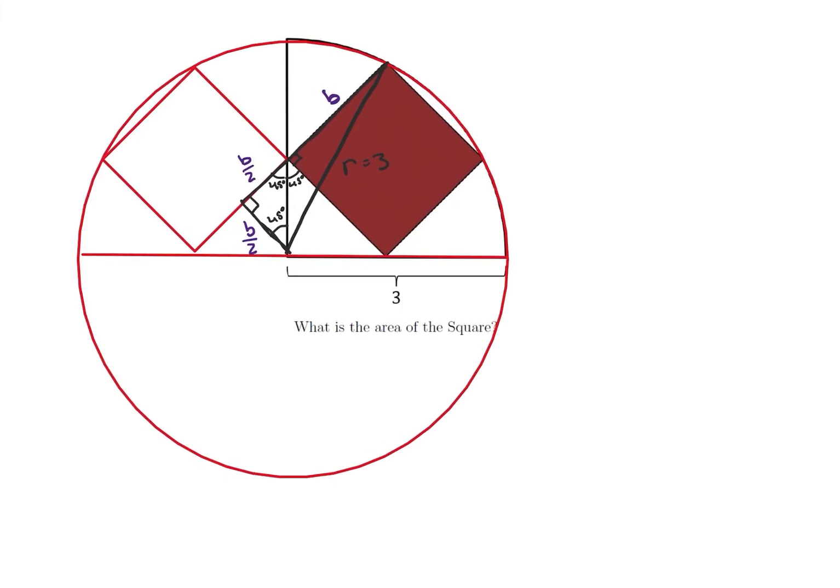Okay, so what we can see here is that B over 2 squared plus B plus B over 2, so 3B over 2, squared is equal to 3 squared.